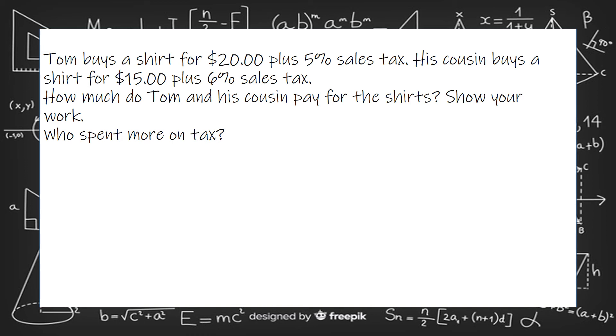And then who spent more on tax? So the first thing we're going to do is say $20 times 5%, so 0.05. 5 times 0 is 0, 5 times 2 is 10, and two numbers after. So Tom pays a dollar in sales tax.